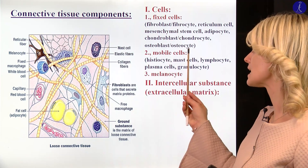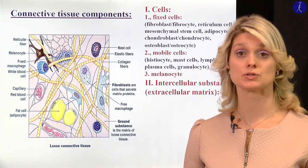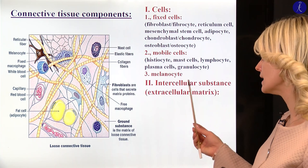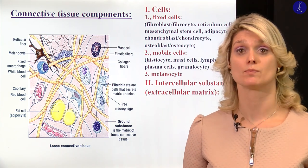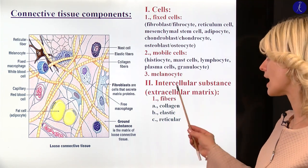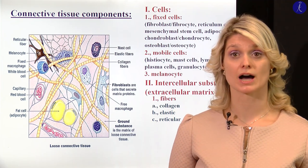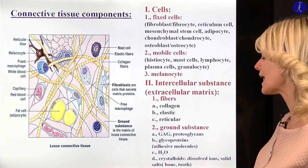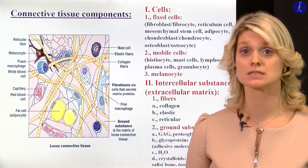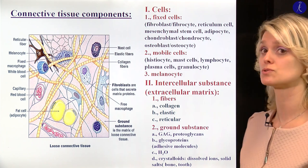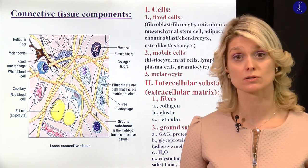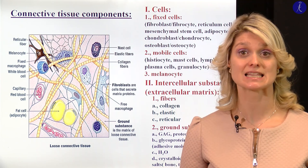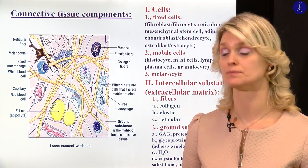Earlier we saw the fixed cells and the mobile cells of the connective tissue, and I told you the main important characteristics of the melanocytes. Today we will see the intercellular matrix — the amorphous ground substance consists of fibers. I will show you the collagen fibers, the reticular fibers, and the elastic fibers, and also the molecular characteristics of the ground substance, which consists of organic materials: glycosaminoglycans, proteoglycans, aminoglycans, and a lot of water. In the case of bone and teeth, we also have inorganic material — crystals.